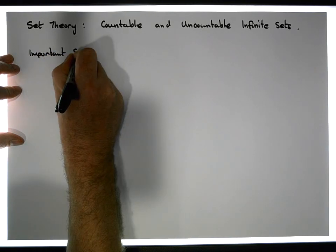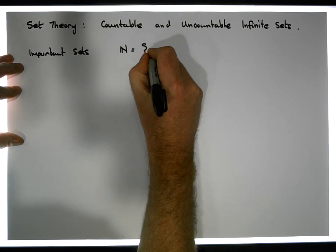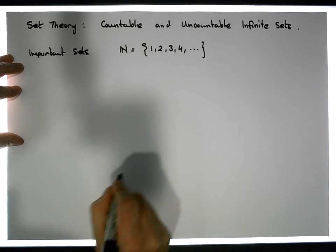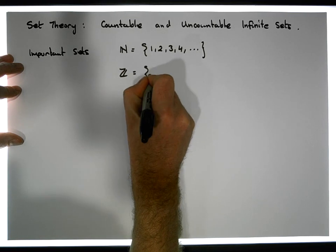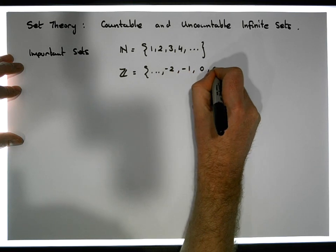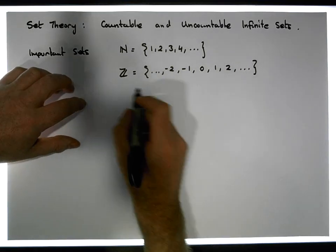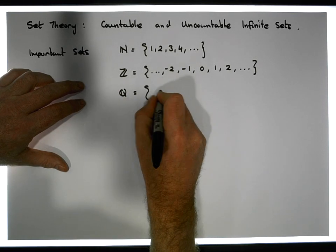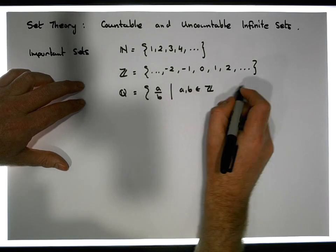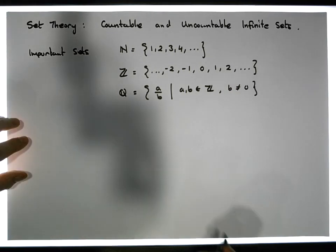Let's relist our important sets. We have the natural numbers N, the set of numbers of the form 1, 2, 3, 4, and so on. We have the integers, the set of numbers that expands to negative infinity: ..., -2, -1, 0, 1, 2, and so on — the negative and positive integers. And we have the rationals Q, the set of fractions a/b such that a and b are elements of Z, with the restriction that b cannot equal zero because division by zero is undefined.